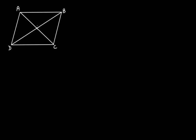Let the point of intersection be O. In a rhombus, all the sides are equal to each other, and the opposite sides are parallel: AB is parallel to CD and AD is parallel to BC. Now we get two triangles here — triangle AOB and triangle COD.